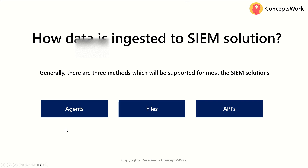Generally speaking, when it comes to understanding how data is ingested to a SIEM solution, there are three different methods supported by most SIEM solutions. The very first one is agents, then you have data ingestion through files, and then you have data ingestion through APIs.